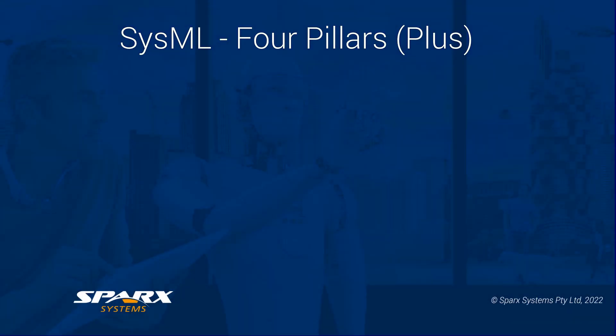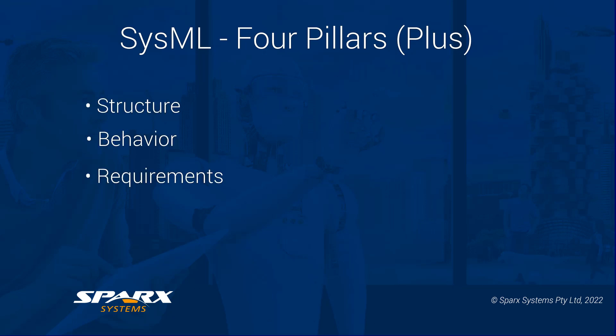As a general overview of SysML, it is expressed as having four pillars with interoperability between these. The four pillars are structure, behaviour, requirements, and parametrics. The general industry interpretation of these four specific modelling types is more focused on the intensity of usage, rather than on any lineal time or staging view.